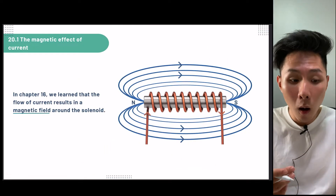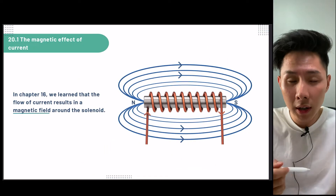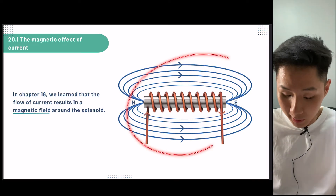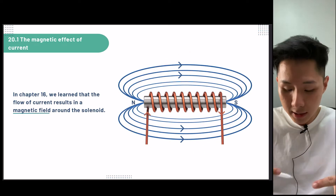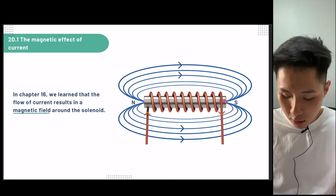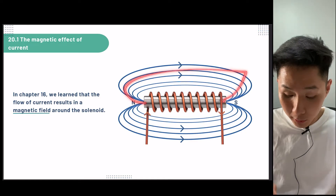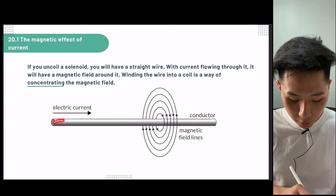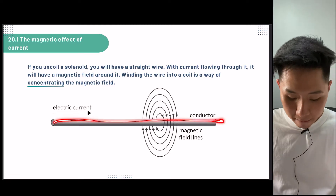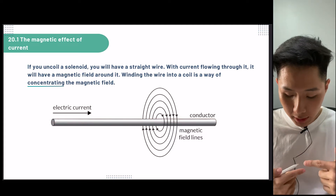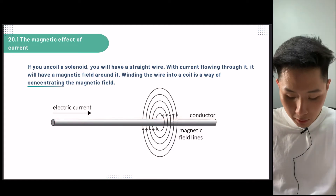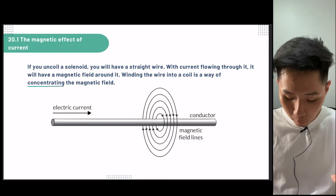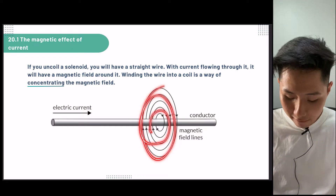So in chapter 16, we learned that when current flows in a wire, it creates a magnetic field. For instance, in a solenoid, when you coil all the wire together and then you turn on the switch, it creates a magnetic field that looks like this. And if you were to uncoil the wire, you'll get a straight wire. Winding the wire into a coil is just a way to concentrate the magnetic field, but if you uncoil it, you'll have a straight wire, and when current flows through it, you will have the magnetic field.